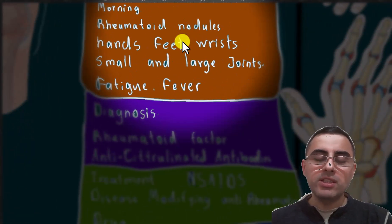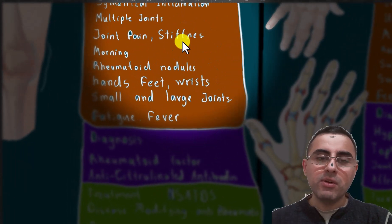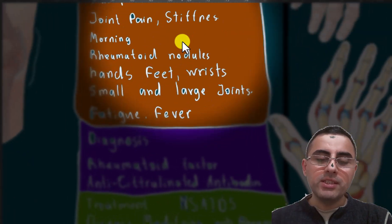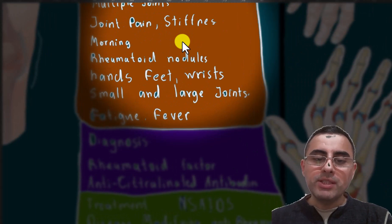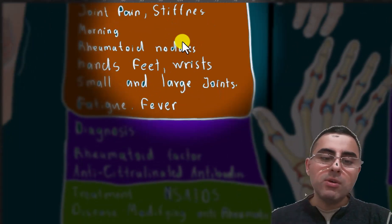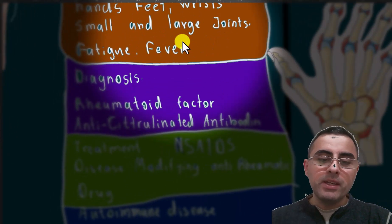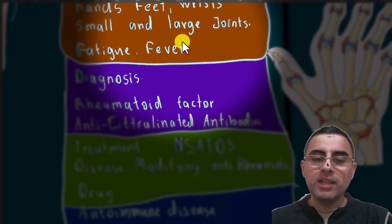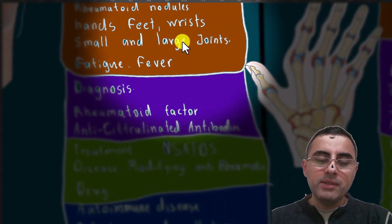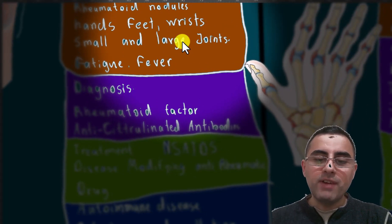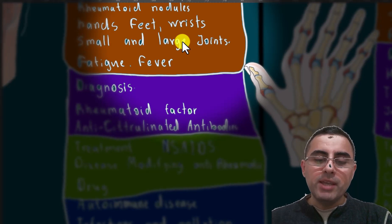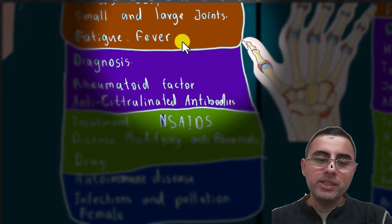Diagnosis of rheumatoid arthritis is based on rheumatoid factor, also anti-citrullinated antibodies, and we have rheumatoid arthritis criteria. Treatment usually is non-steroidal anti-inflammatory drugs. DMARDs, disease modifying anti-rheumatoid arthritis drugs, are commonly effective.